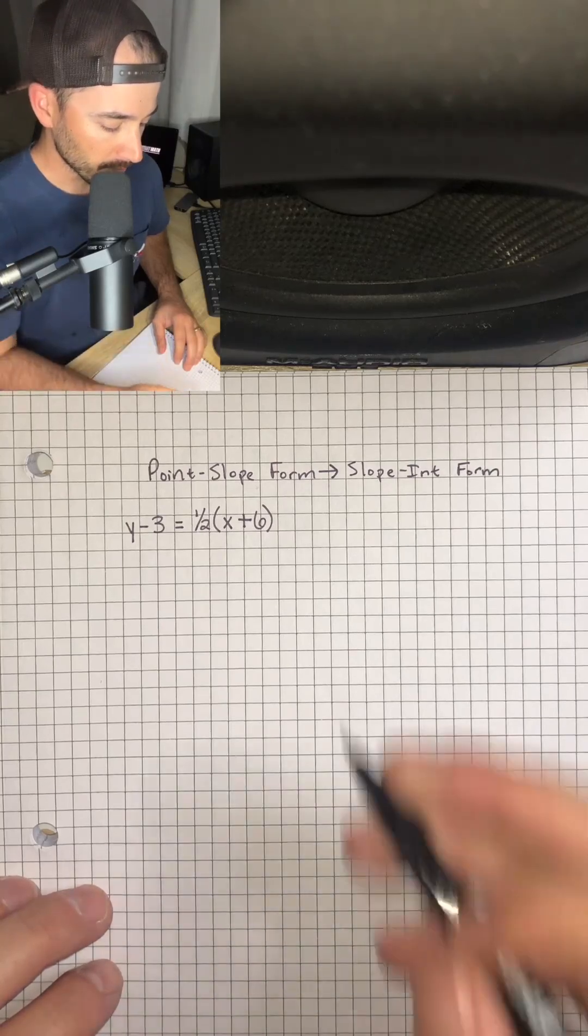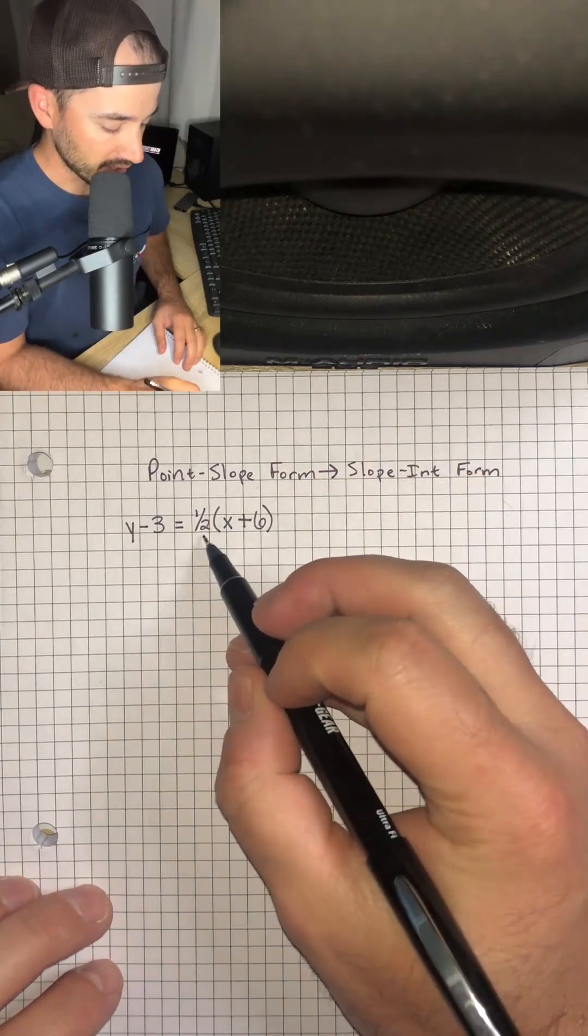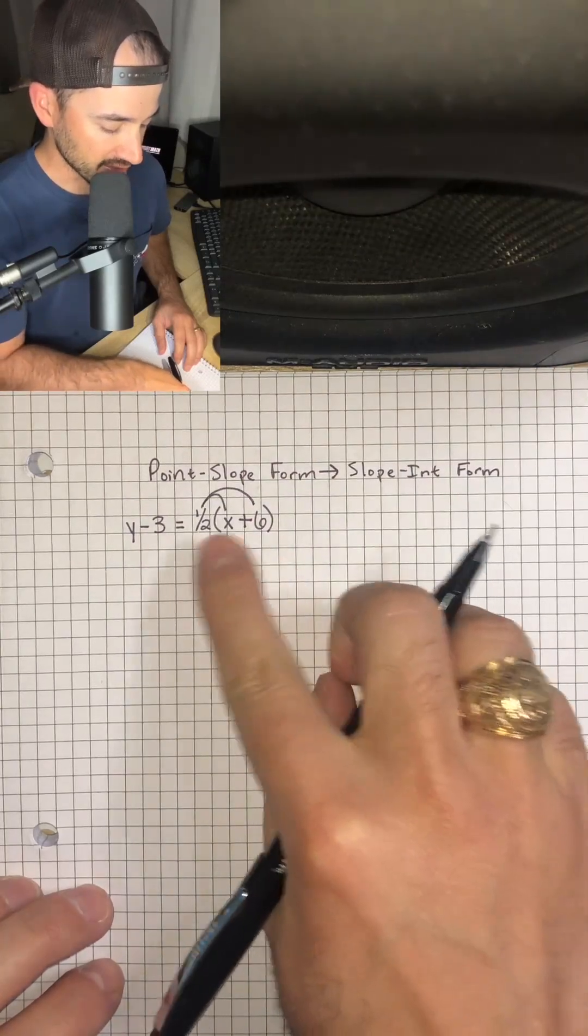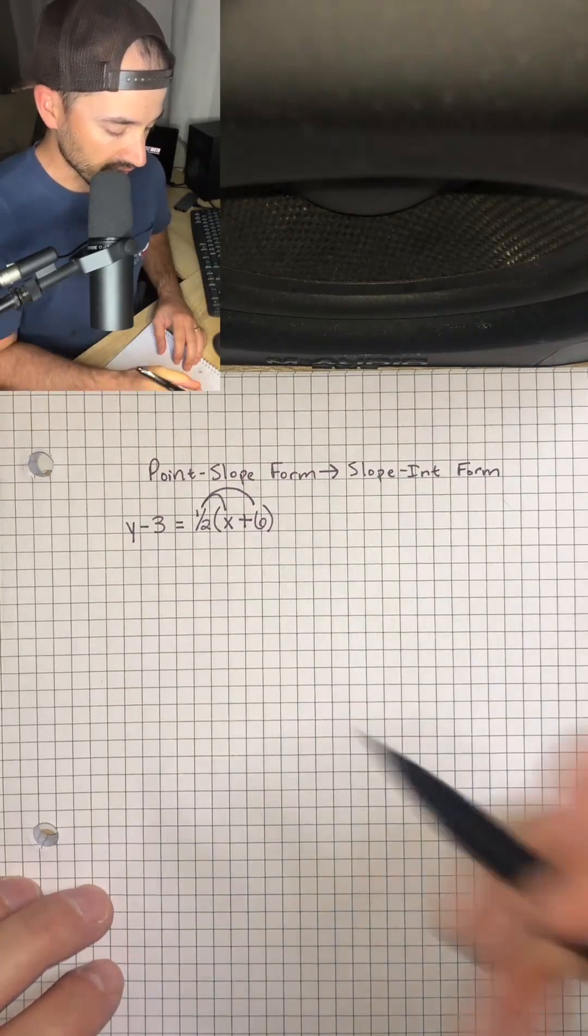The first thing we're going to do is we're going to look at our slope right here and distribute it to both terms inside the parentheses, okay? So once we do that,